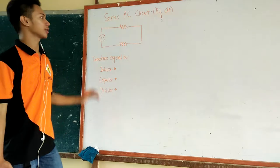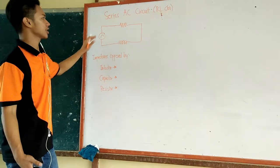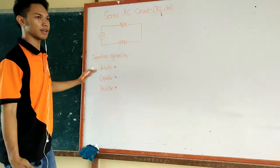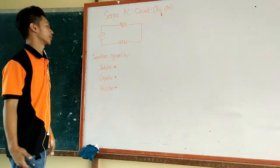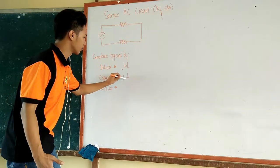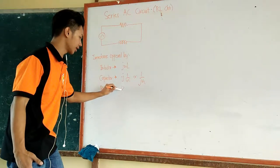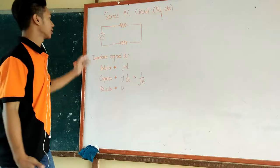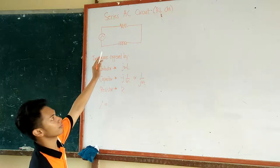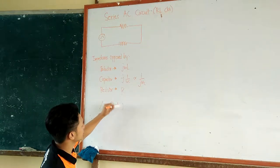In a series AC circuit, an RL circuit — a resistor-inductor circuit — we have a circuit with a sinusoidal AC source voltage, a resistor, and an inductor. Every circuit element has its own impedance. The impedance offered by an inductor is jωL, for a capacitor it is 1 over jωC, and for a resistor simply R. Since this RL circuit is a series circuit, we can just add all the impedances to get the total impedance: Z equals R plus jωL.